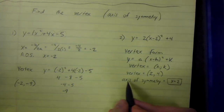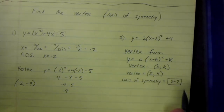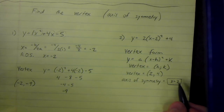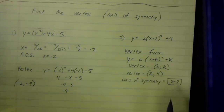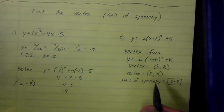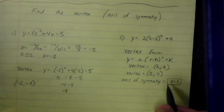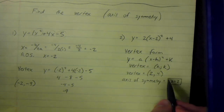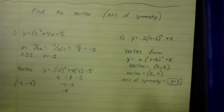Be really careful when writing the axis of symmetry. Some people just write down 2, but that's not good enough. The axis of symmetry is a line, not just a number, so you write down an equation: x equals 2.